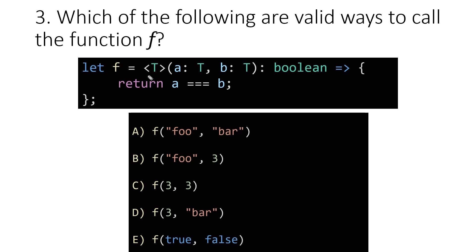We know that this function f is generic for any type T because of this diamond-T declaration that happens before its parameter list — so this is any type T. But there's an asterisk here: whenever we use this function, T has to be the same anywhere it gets substituted.